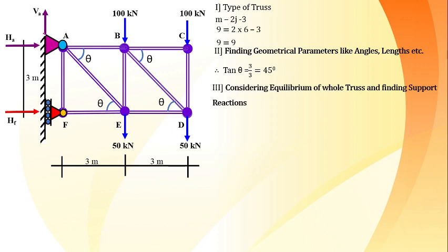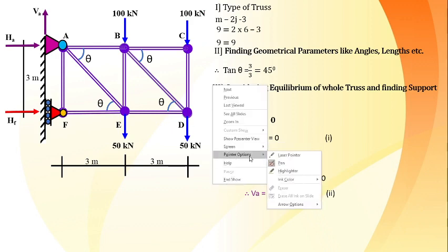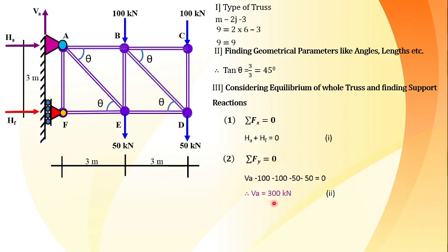Now consider the equilibrium of the whole truss to find support reactions. The truss is supported by a hinge at A and a roller at F, giving two reactions at A and one at F. Applying sigma Fx = 0: HA + HF = 0. Applying sigma Fy = 0: VA minus 100 minus 100 minus 100 minus 50 minus 50 minus 50 = 0, giving VA = 300.